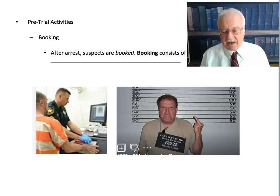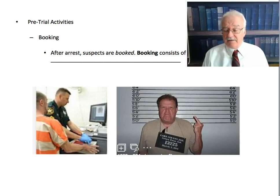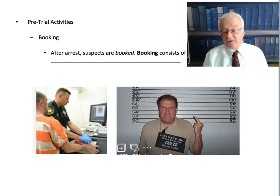Now let's move into the next step in the process: pre-trial activities. The first is booking. After a person is arrested, they are booked. Booking consists of photographing, taking the fingerprints, and recording identifying information of a person who's arrested — name, address, height, weight, tattoos, and other identifying information. That's called booking.